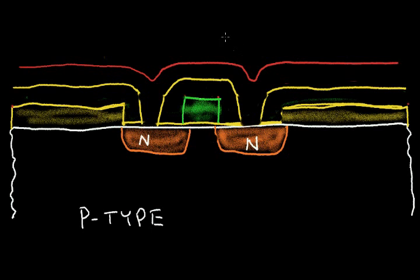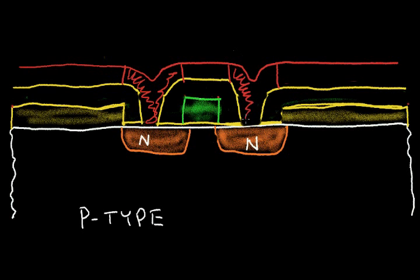Then I can use another mask and another layer of photoresist, and etch the metal away so that it remains over the source diffusion region and over the drain diffusion region. This metal contacts each of those regions.